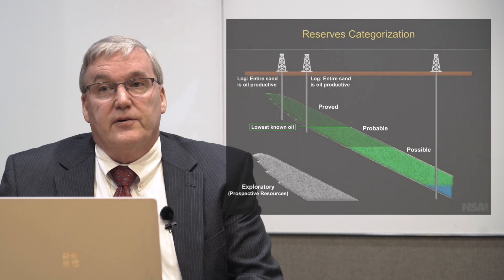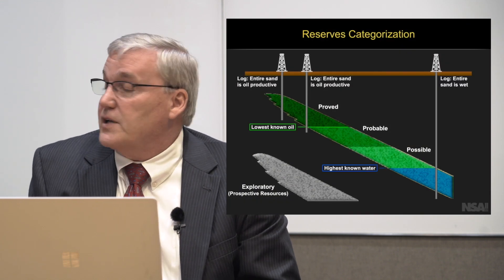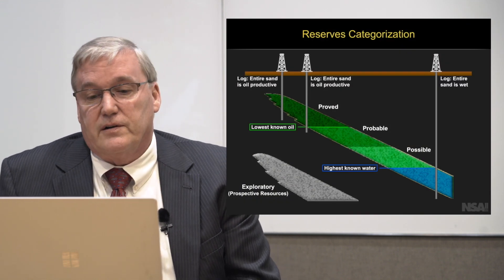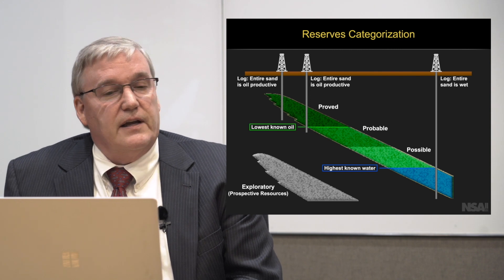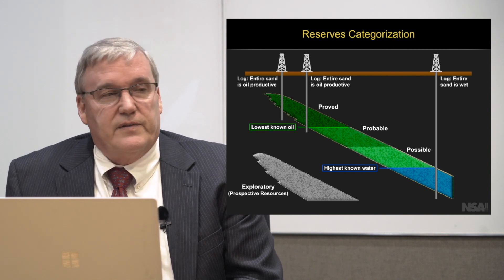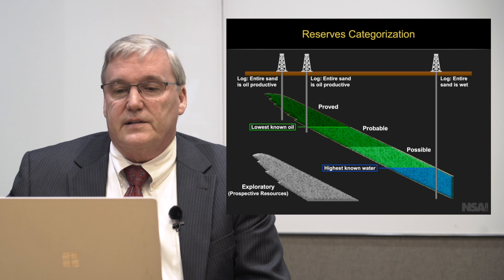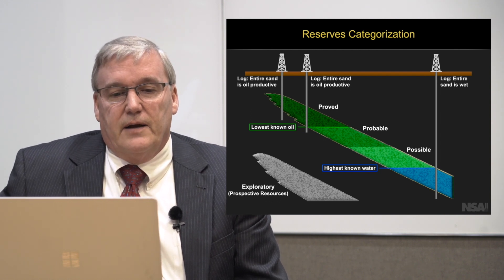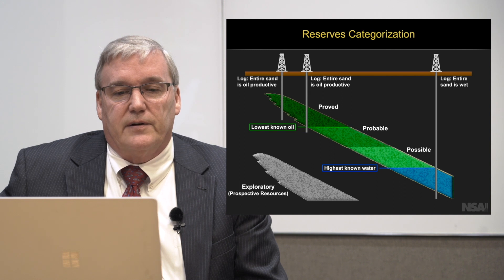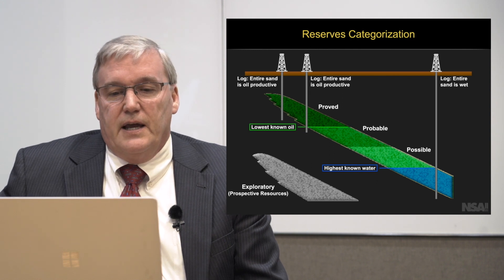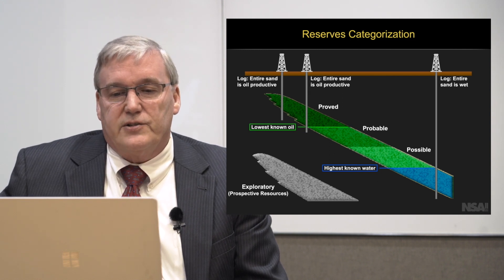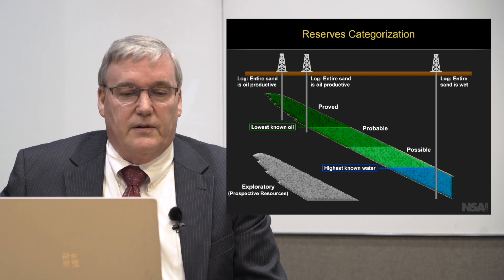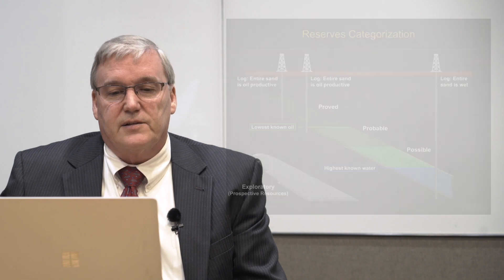We drill a third well but we went a little too far — it looks like we find the well full of water. That presents a limit to the reservoir. We know there's water up to a certain point at the top of this well, meaning no hydrocarbons below here. We have the lowest known hydrocarbon up in the second well we drilled, and in between we would have some range of probable and possible reserves. We still don't have anything that changed in the second sand and exploration.